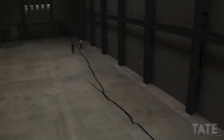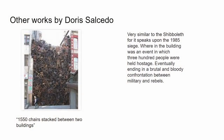Very similar to the Shibboleth, 1,550 chairs stacked between two buildings. This work is very similar to the Shibboleth for it speaks upon another event worth remembering, known as the 1985 siege. The building where the chairs are stacked held an event in which 300 people were held hostage, eventually ending in a brutal and bloody confrontation between military and rebels. This work also fits in very well with how she perceived art. All art to her, from abstract to renaissance, was political.